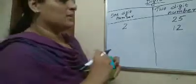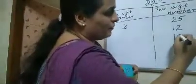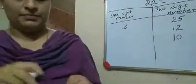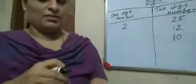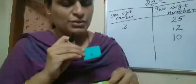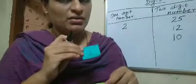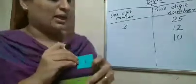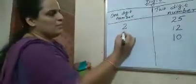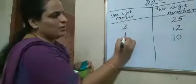Ok. Next number: what is number 1? 1 is a 1-digit number. Ok, 1-digit number.